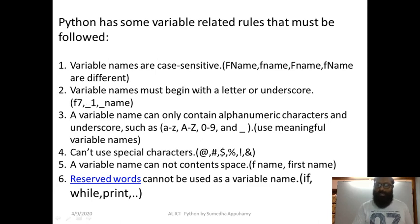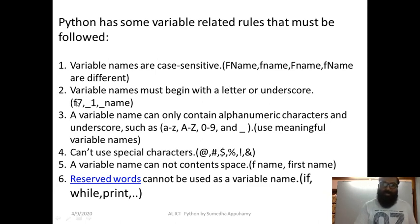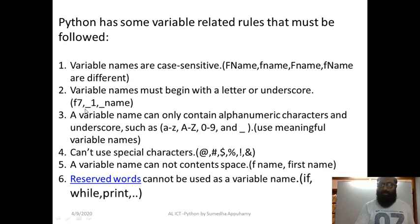Variable names must begin with a letter or an underscore. So when you are starting a variable, you have to use an alphabet letter — simple or capital — and you can follow with other digits. Or you can start with an underscore. For example, F7 is a valid variable name, underscore_1 is a valid variable name, and underscore_name is a valid variable name. So you can start with a letter or an underscore.